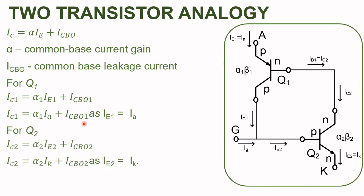Similarly, for transistor Q2, IC2 equals alpha2 times IE2 plus ICBO2. From the figure, IE2 equals the cathode current IK. Replacing IE2 with the cathode current, we get IC2 equals alpha2 times IK plus ICBO2. These two equations are of importance to us and we will carry them forward.